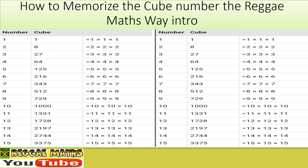Cube of one is one times one times one. Say it again: the cube of one is one times one times one, which equals one. One. The cube root of one is one. The cube of two is two times two times two, equal to eight. The cube root of eight is two.